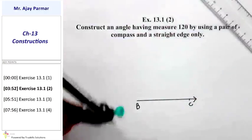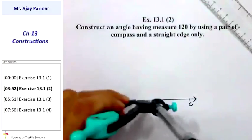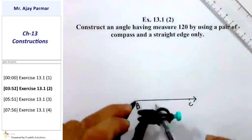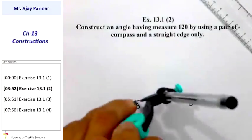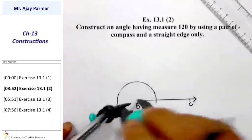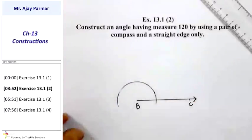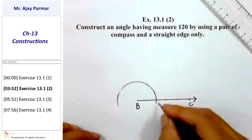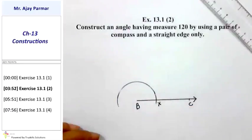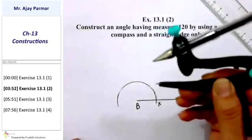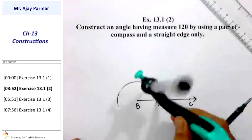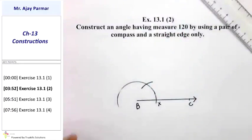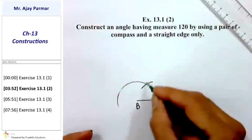Taking any arbitrary radius, I will draw a bigger arc. That arc intersects ray BC at point X. Then, taking X as the center without changing the radius, I will draw another arc which intersects the previous arc. Let us call this point of intersection as point O.